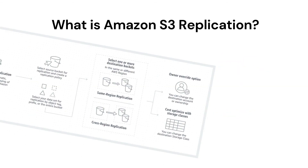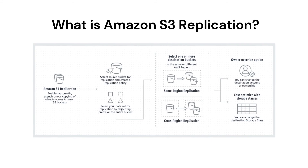Our next question is: what is Amazon S3 Replication? Amazon S3 Replication enables automatic or synchronous copying of objects across Amazon S3 buckets. Buckets that are configured for object replication can be owned by the same AWS account or by different accounts. You can copy objects to one or more destination buckets between different AWS regions — that is S3 cross-region replication — or within the same AWS region — that is S3 same-region replication.